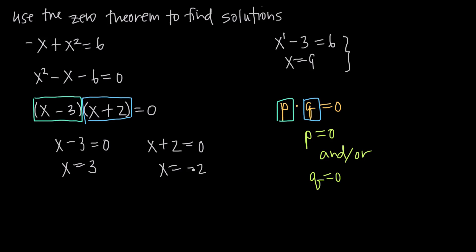This tells us that three and negative two are the solutions to our quadratic equation. Because if x is three, then the first factor will be zero, and we'll get zero times quantity x plus two, or just zero equals zero. We can prove this to ourselves by plugging these values back in. If x equals three is a solution and I plug it into the factored equation, I get three minus three in the first factor, and three plus two equals zero.